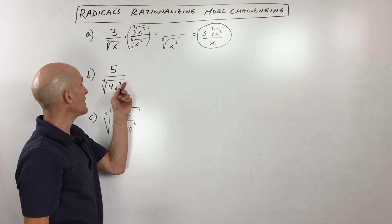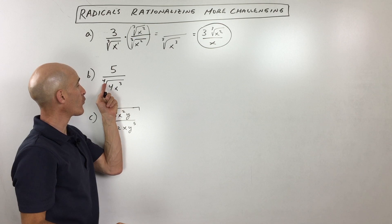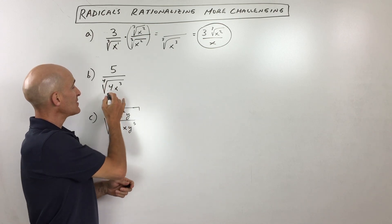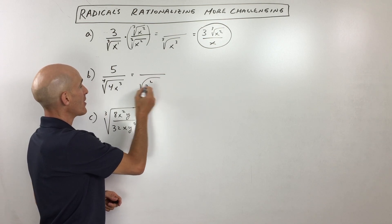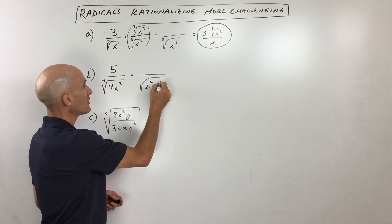Okay, let's look at example B now. Here we have 5 divided by the fourth root of 4x cubed. Now you see this 4 here? You can think of this as 2 squared. So 4 is really 2 squared.